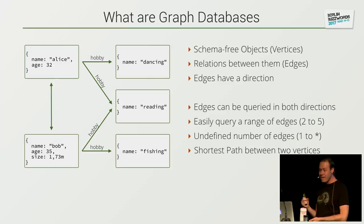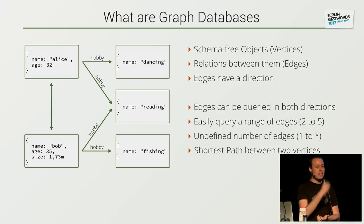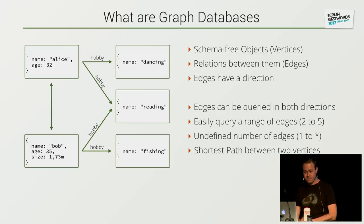Graph databases can even say, I don't know how many edges are in between, so I just go until I find the vertex that I'm looking for. And you can say, I have a vertex here and a vertex there — please give me the shortest connection between them.